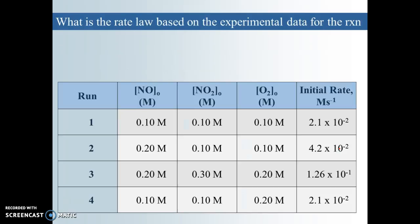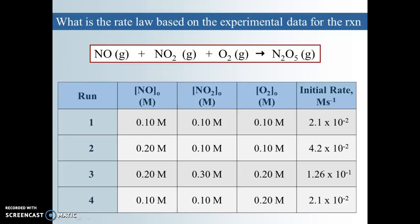Take a minute and determine what the rate law is for this new reaction. The key is to find trials where only one variable is changing. Trial one and two are good to compare because the only thing different is we doubled the concentration of NO. When I doubled NO, my rate doubled — that means it is directly proportional. So in the rate equation, the rate equals k times NO to the first power, and the exponent is one, which we don't have to write.